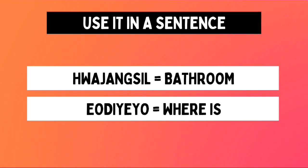The Korean translation can be divided into two parts: Hwa Jang Shil and Odie-yo. Hwa Jang Shil is our word for today, which means bathroom, and Odie-yo means where. So when we say Hwa Jang Shil Odie-yo, it means "Where is the bathroom?" There is also a subject marker suffix, E, added to Hwa Jang Shil to indicate it is the subject of the sentence. So Hwa Jang Shil i Odie-yo means "Where is the bathroom?"